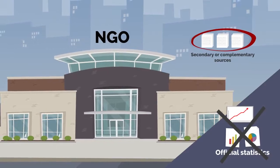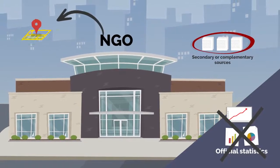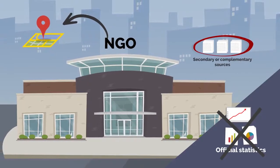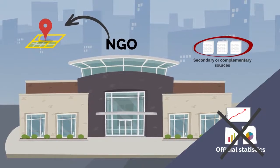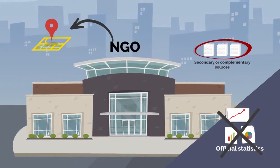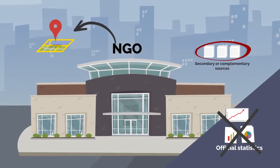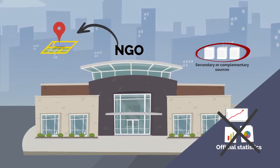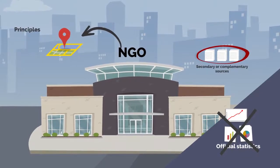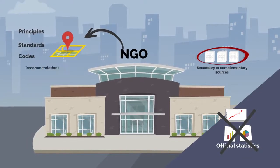NGOs may produce statistics only for their own purposes, specific to one geographical location, and thus cannot guarantee impartiality, trustworthiness, and credibility of the data in terms of compliance with internationally agreed principles, standards, codes, and recommendations.